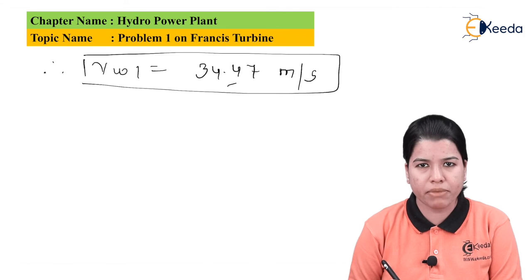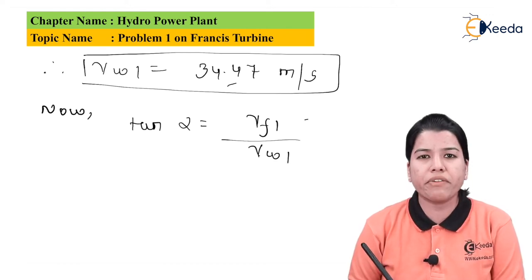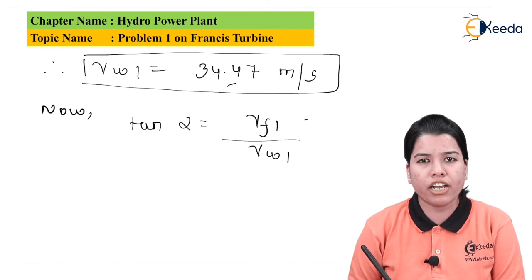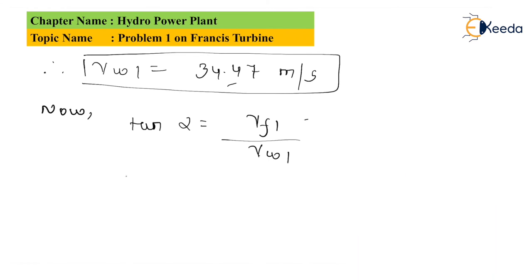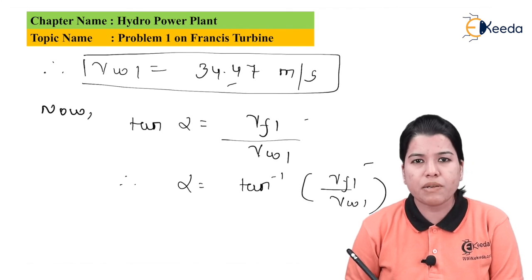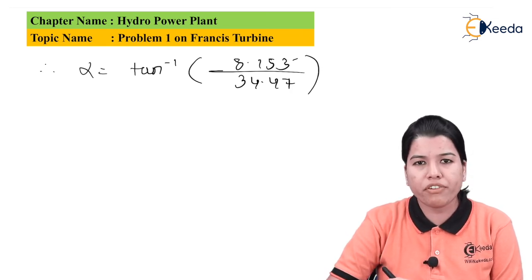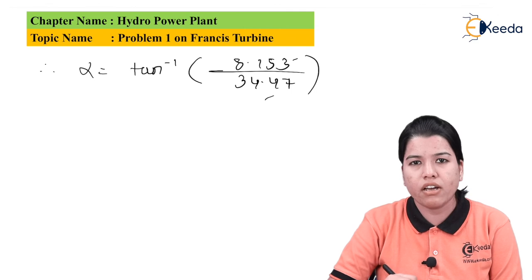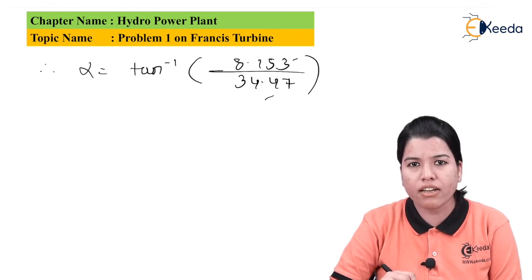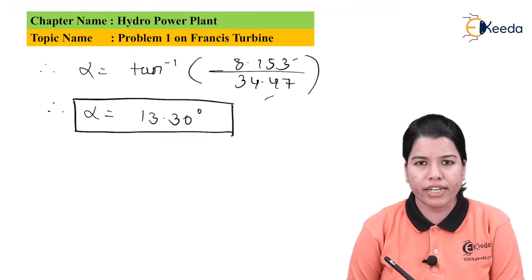The guide vane angle alpha is found using tan(α) = Vf1 ÷ VW1. Therefore, α = tan⁻¹(8.153 ÷ 34.47) = 13.30 degrees.